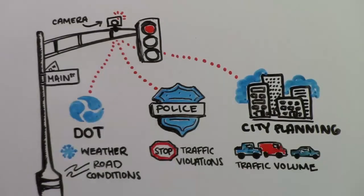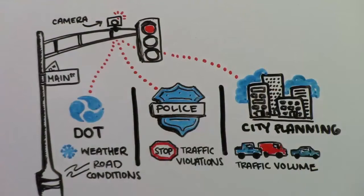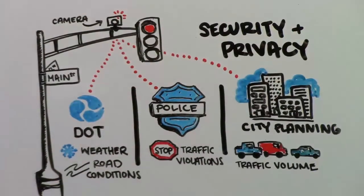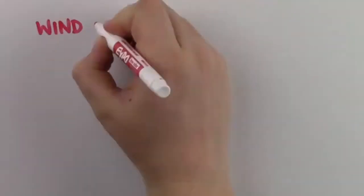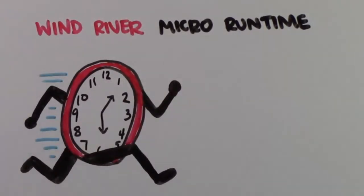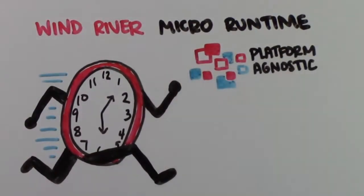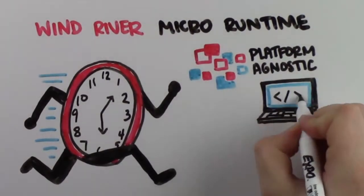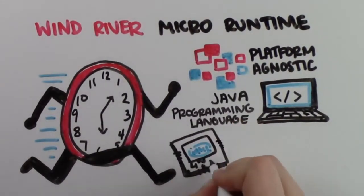All of this data is useful and important, but needs to be kept separate for security and privacy reasons. These obstacles are why we've created Wind River Micro Runtime Technology, a platform-agnostic managed runtime, compatible with the Java programming language, optimized for Intel platforms, and available on other architectures too.